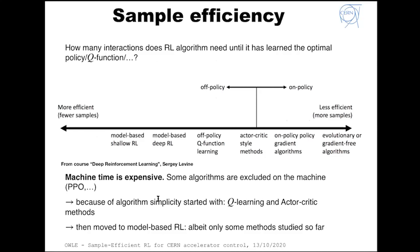Which algorithm should one choose? One key criterion for us was sample efficiency: how many interactions does the RL algorithm need until it has learned the optimal policy or Q function? There is a clear difference among algorithms in terms of sample efficiency. In general, on-policy algorithms — like policy gradients — are less sample efficient. Off-policy algorithms, like actor-critic or Q-learning algorithms, are more sample efficient, and the most sample efficient are model-based algorithms. Machine time is expensive, so some algorithms — like on-policy policy gradient algorithms — are essentially excluded for on-machine use.